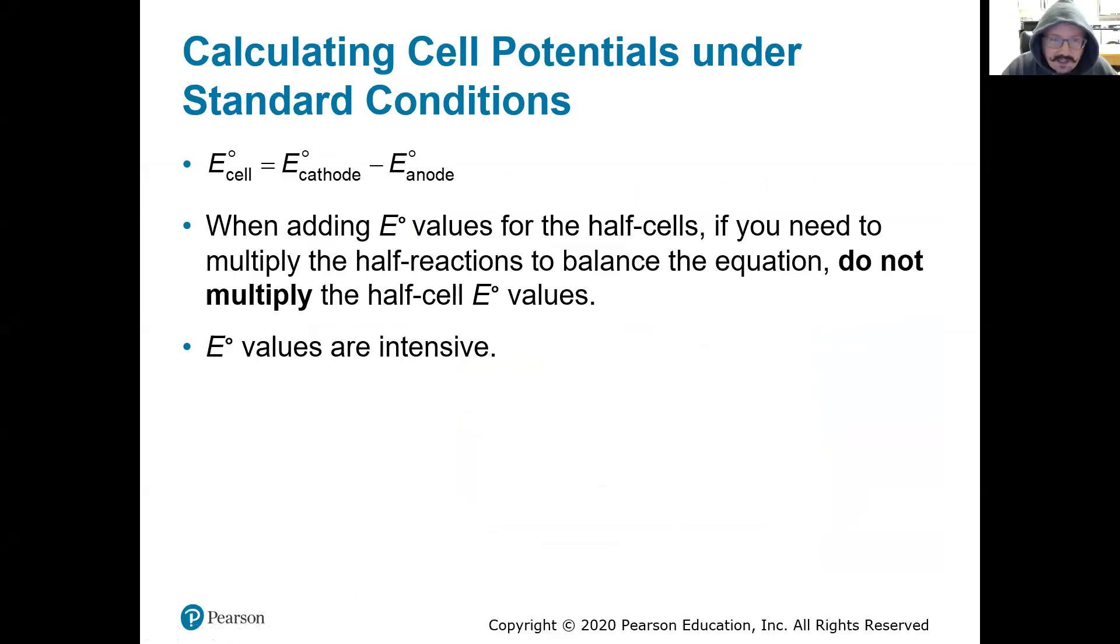How do we calculate that E of that cell? We need to figure out where the oxidation's occurring, where the reduction's occurring, what's the cathode, what's the anode. Go find those two reduction potentials from that table, and the easiest way to do it is just cathode minus anode.